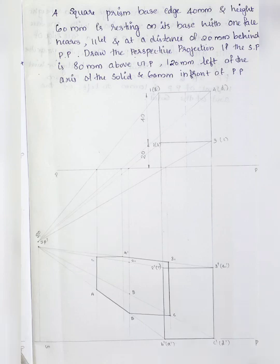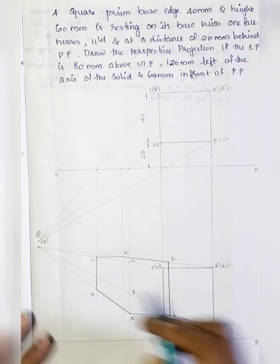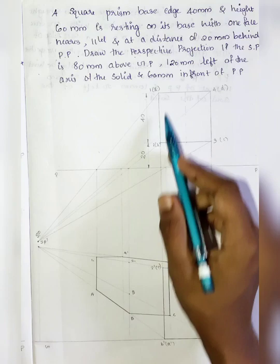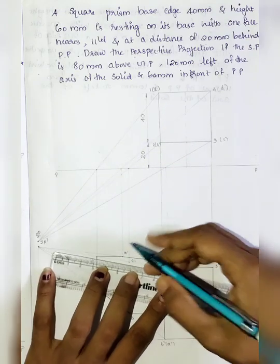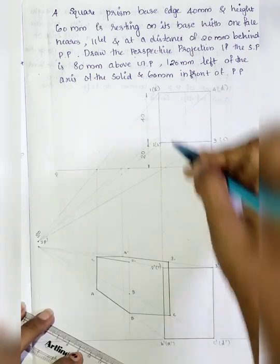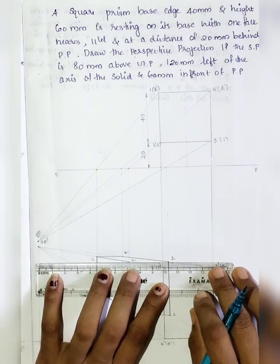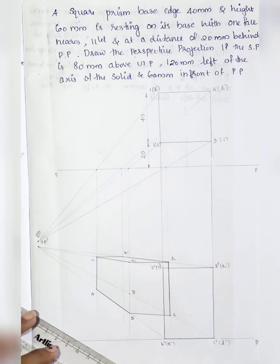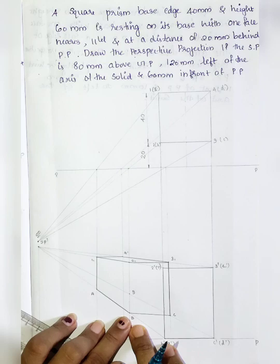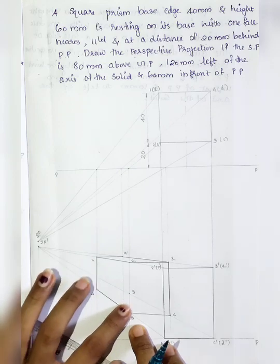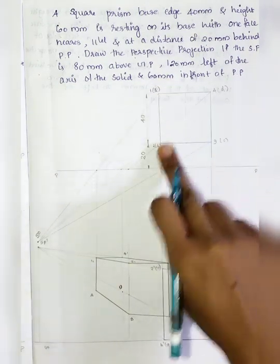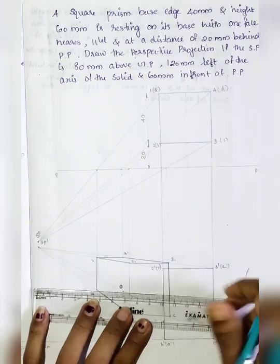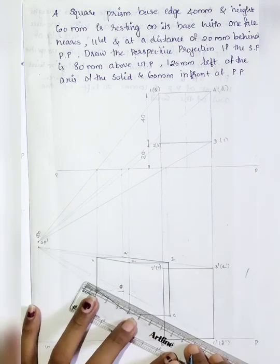Points 1, 2, 3, 4 form the top base and A, B, C, D form the bottom base. The visible edges on the bottom base are A to B and B to C. Edge A to D is invisible and D to C is also invisible. These invisible edges are shown as dashed lines in the perspective projection.